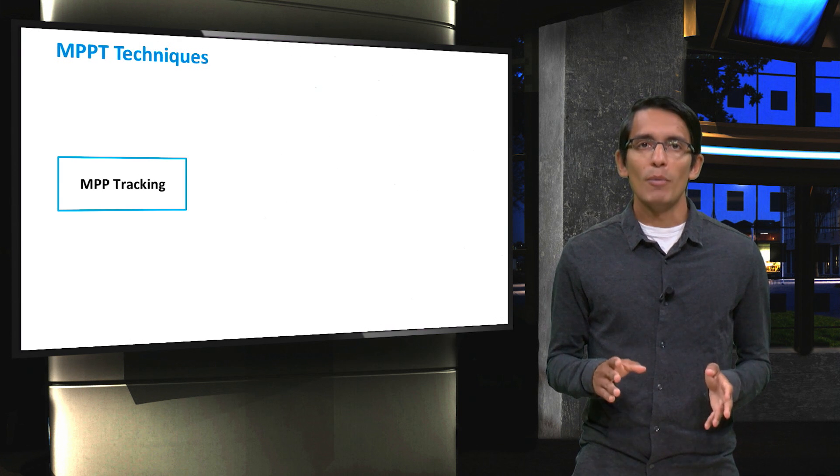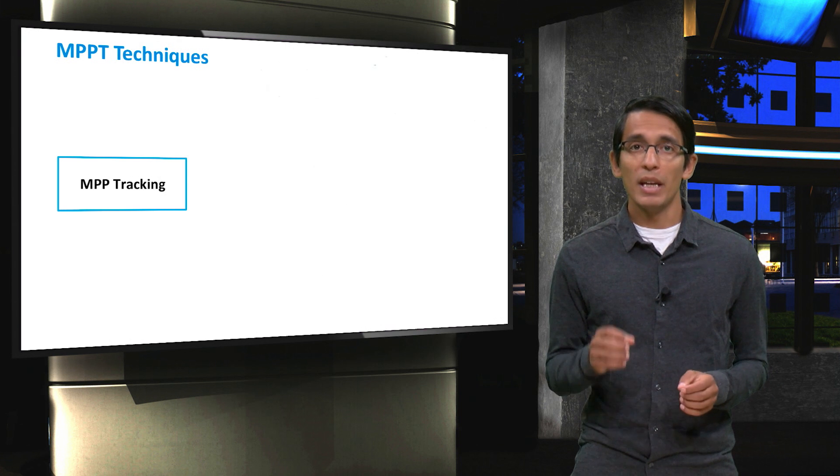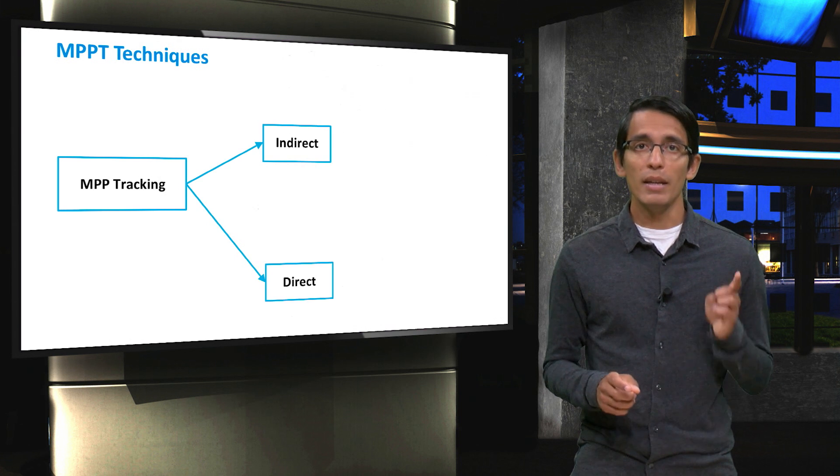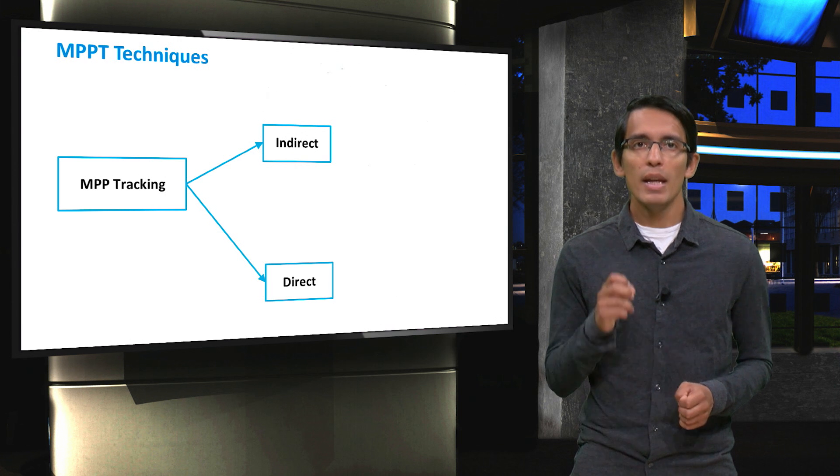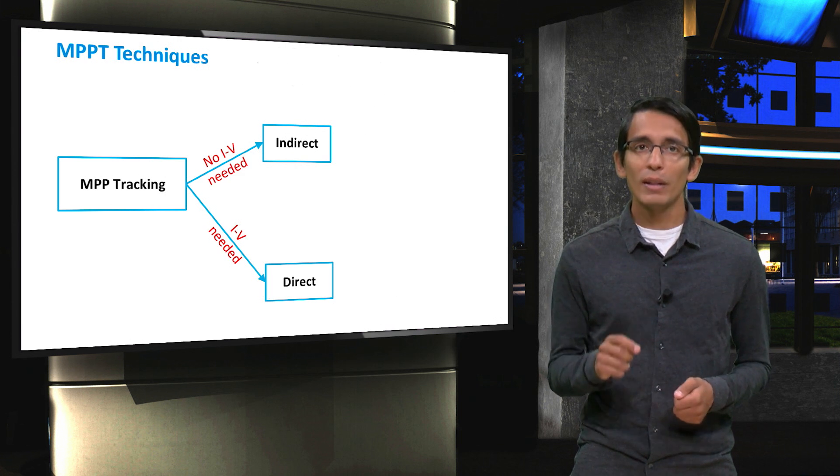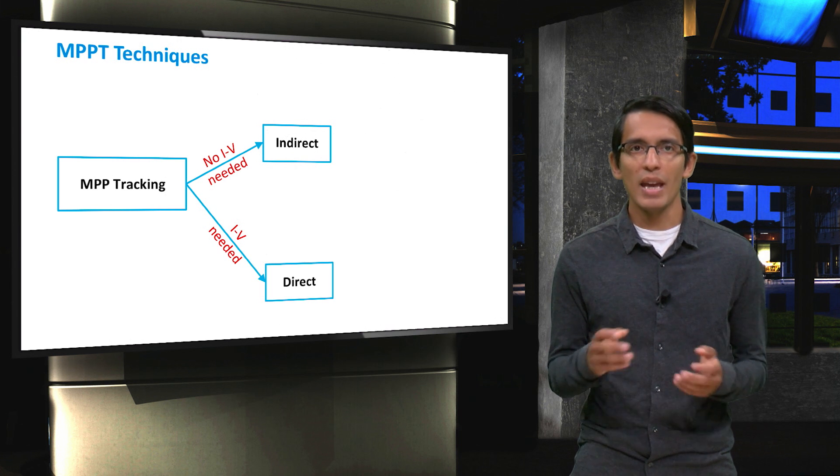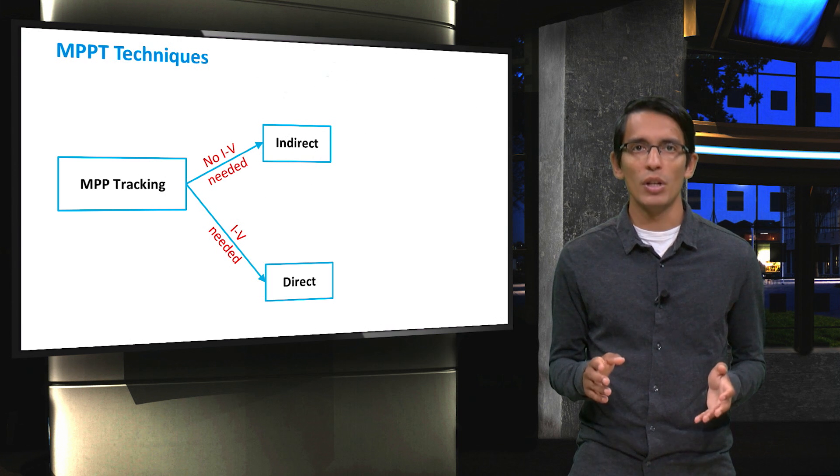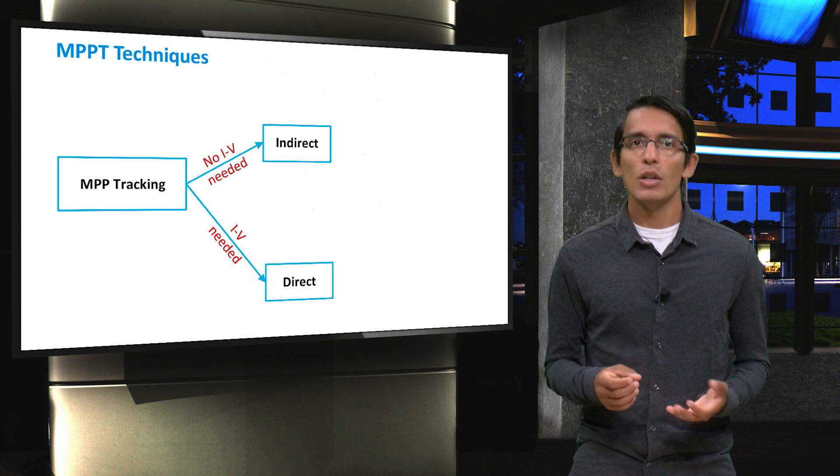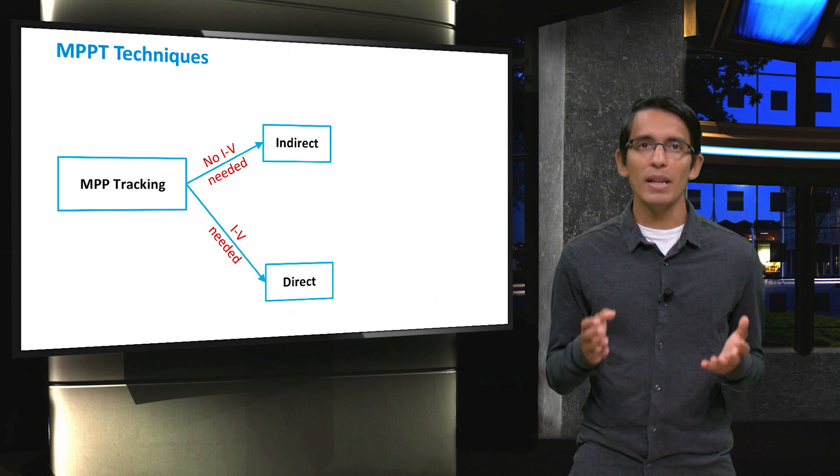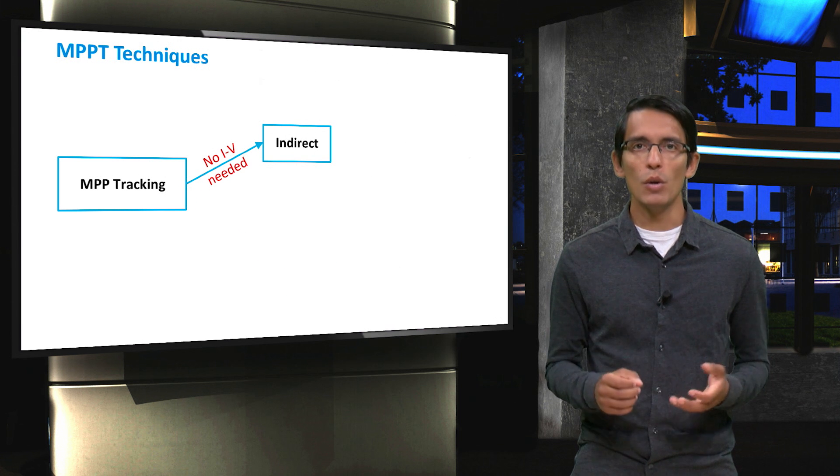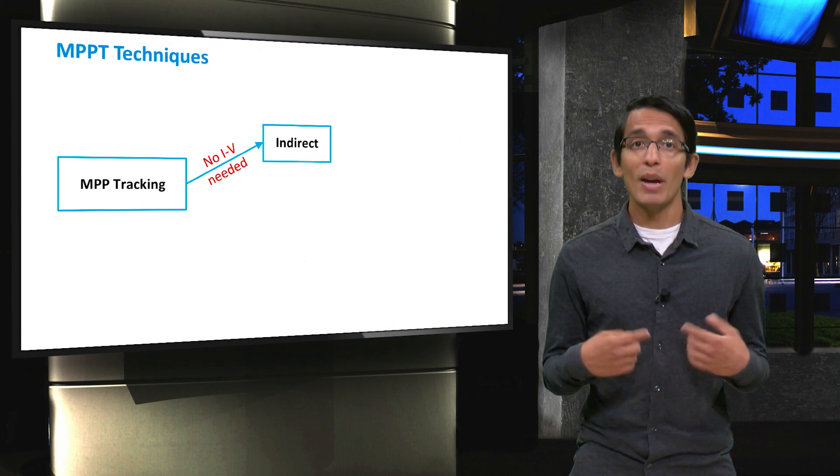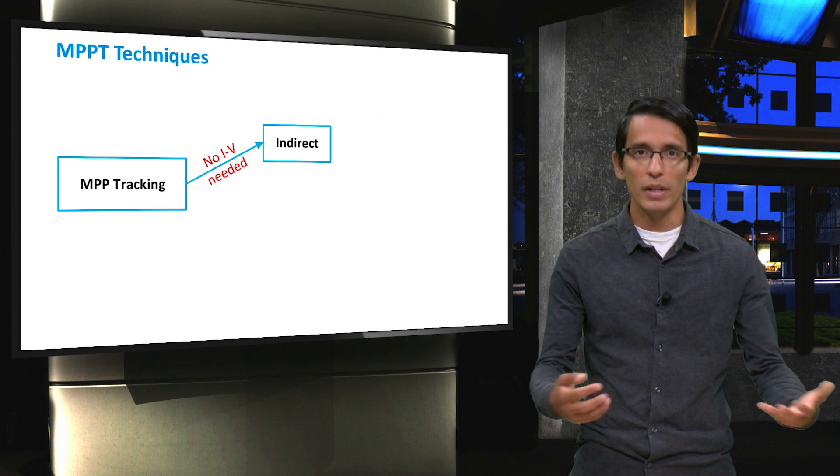There are many techniques for maximum power point tracking, but they can be divided into direct and indirect techniques. The main difference is that direct techniques directly track the MPPT by scanning through the IV curve of the solar cell, while indirect techniques use some other input to indirectly estimate the maximum power point. This video focuses on those indirect techniques, while the direct techniques will be explored in other videos.